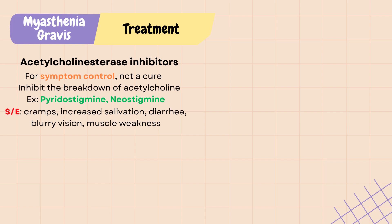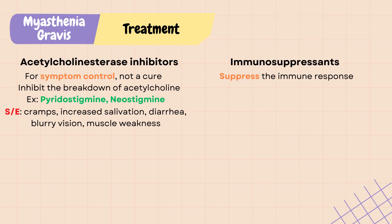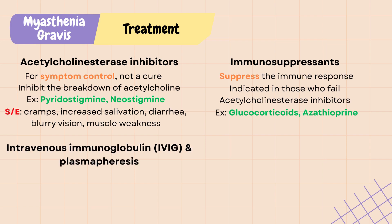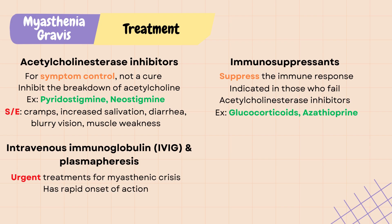The next line of treatment is immunosuppressants, which suppress the immune response and are indicated in patients still symptomatic after acetylcholinesterase inhibitors. Common examples include glucocorticoids and azathioprine. Intravenous immunoglobulin and plasmapheresis are used as urgent treatments for myasthenic crisis due to their rapid onset of action, and for those resistant to immunosuppressants. A thymectomy, or removal of the thymus, can be done in those with thymoma.